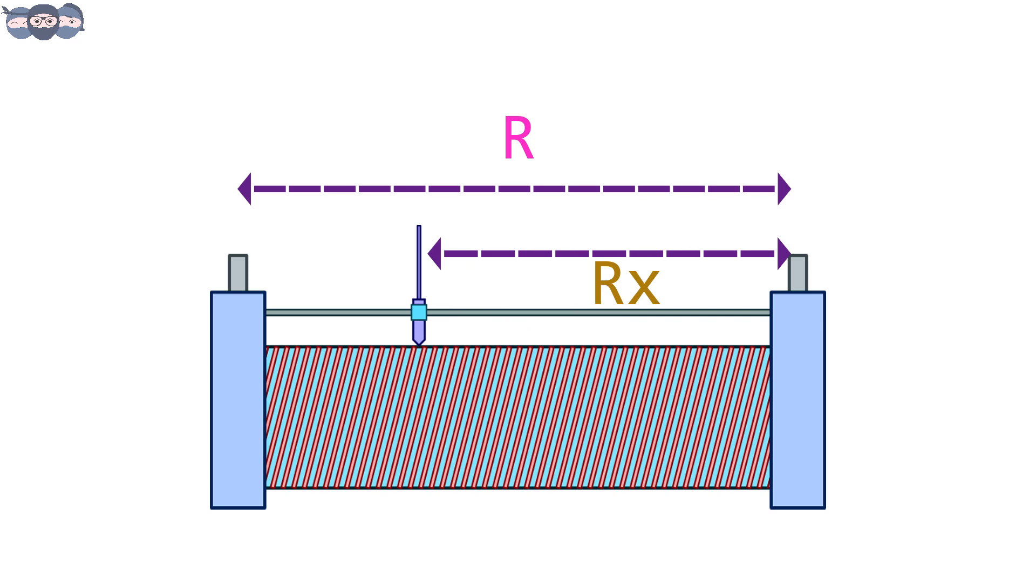Let us understand this by deriving the corresponding equations. As shown in the figure, let the total resistance of the potentiometer be R and the total length be L. From the resistance formula, we get R equals ρ into L divided by A.